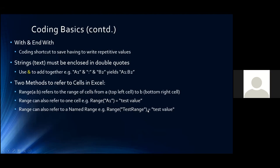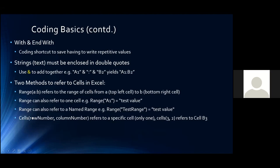Cells is the other way of referencing — it only refers to one specific cell at a time, using the row number first, then the column number. So Cells(3, 2) refers to the cell with row number 3 and column number 2 — which is the same as cell B3.